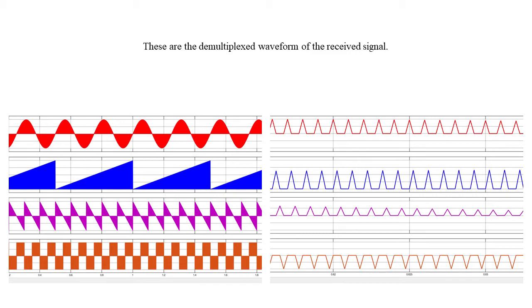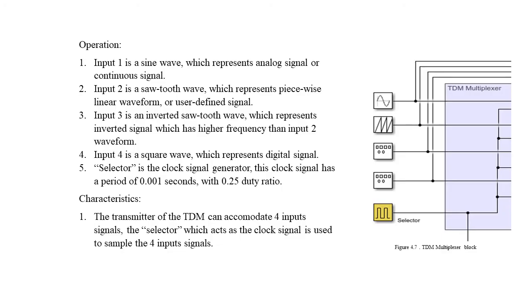Now we'll talk about the component functionality at the multiplexer, the transmitter side. Input 1 is a sine wave representing an analog signal. Input 2 is a sawtooth wave, a piecewise linear waveform. Input 3 is an inverted sawtooth. Input 4 is a square wave which represents a digital signal. The selector block diagram is actually a clock generator signal with a period of 1 millisecond and 0.25 duty ratio.